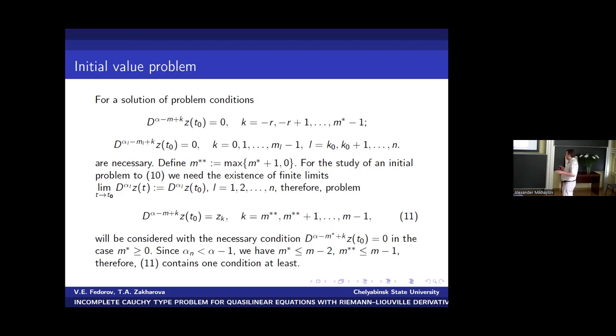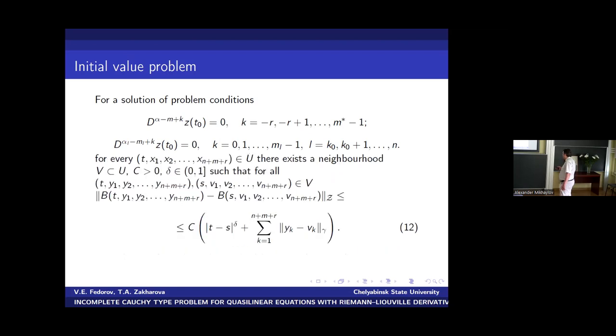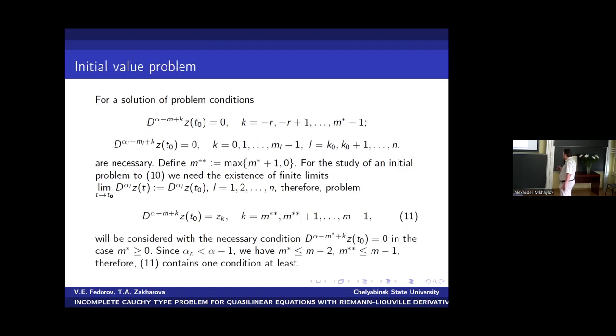We obtain such result and it will be in the report of Mikhail Turov. And for this reason we take m star twice as such number m star plus one. And we will consider this incomplete Cauchy type problem.